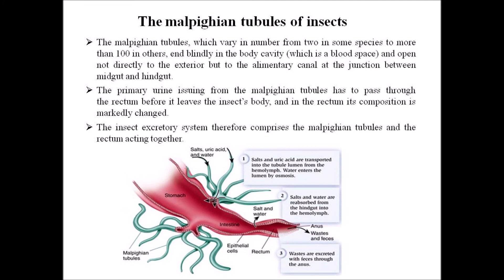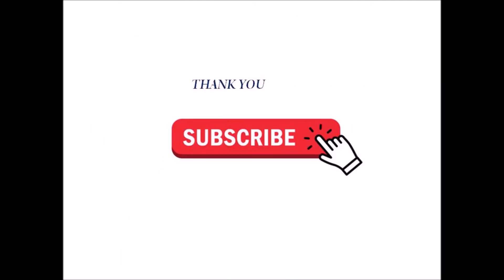The Malpighian tubules, which vary in number from 2 in some species to more than 100 in others, end blindly in the body cavity and open not directly to the exterior, but to the alimentary canal at the junction between mid-gut and hindgut. The primary urine issuing from the Malpighian tubule has to pass through the rectum before it leaves the insect's body, and in the rectum its composition is markedly changed. The insect excretory system therefore comprises the Malpighian tubules and the rectum acting together.